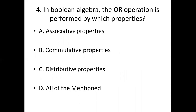Fourth bit. In Boolean algebra, the OR operation is performed by which properties? Option A: associative properties. Option B: commutative properties. Option C: distributive properties. Option D: all of the mentioned. Answer: Option D, all of the mentioned.